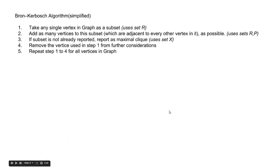Bron-Kerbosch simplified: First, take any single vertex as the subset using set R. Second, add as many vertices to the subset which are adjacent to every other vertex in it — these candidates are held in set P. Third, if the subset is not already reported, report it as a maximal clique using set X: if X is not empty, we cannot report it as maximal. Fourth, remove the vertex from further consideration and repeat steps 1–4 for all vertices in the graph.